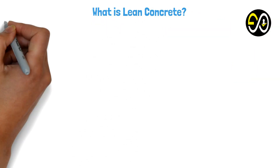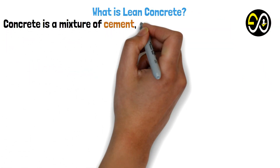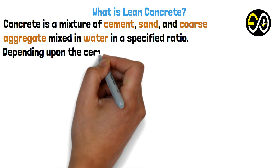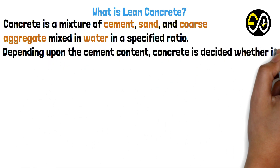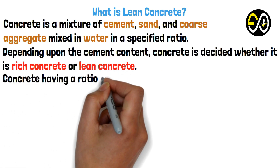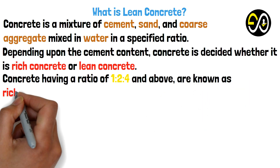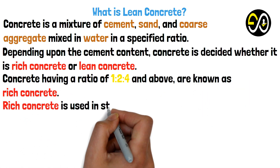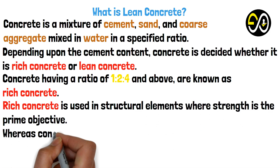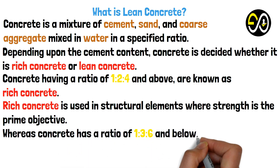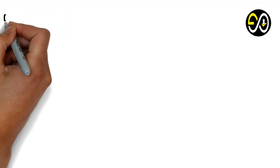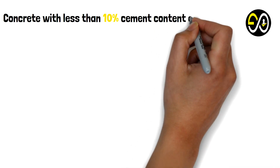Concrete is a mixture of cement, sand, and coarse aggregate mixed in water in a specified ratio. Depending upon the cement content, concrete is classified as rich concrete or lean concrete. Concrete having a ratio of 1:2:4 and above is known as rich concrete, used in structural elements where strength is the prime objective. Concrete with a ratio of 1:3:6 and below is known as lean concrete.